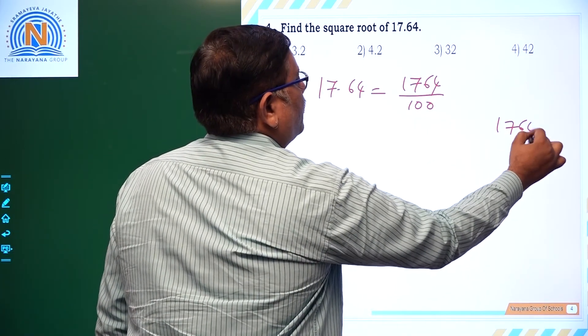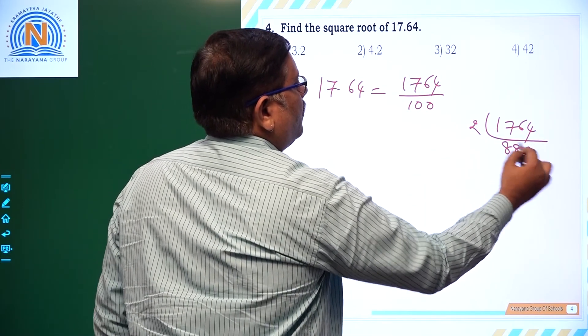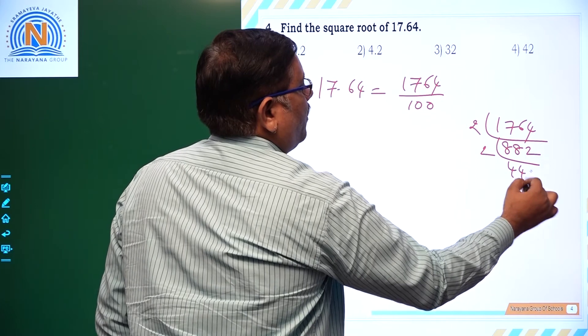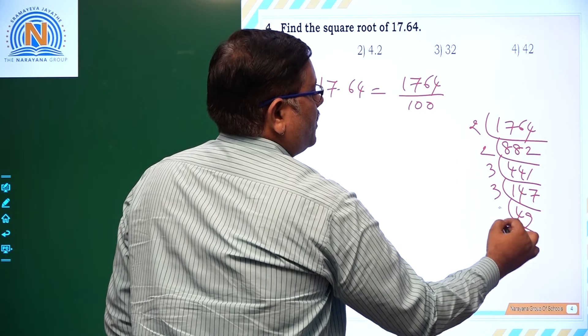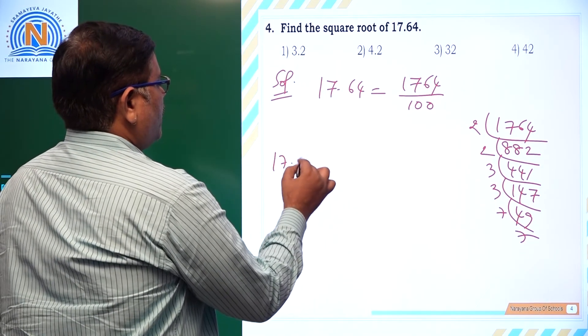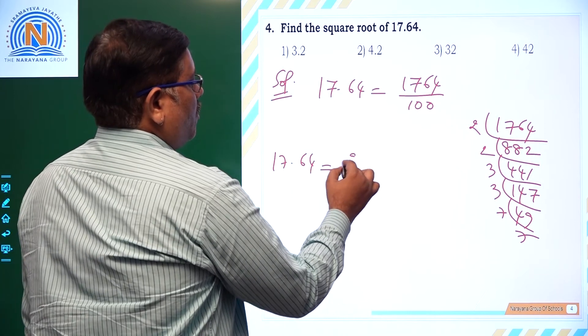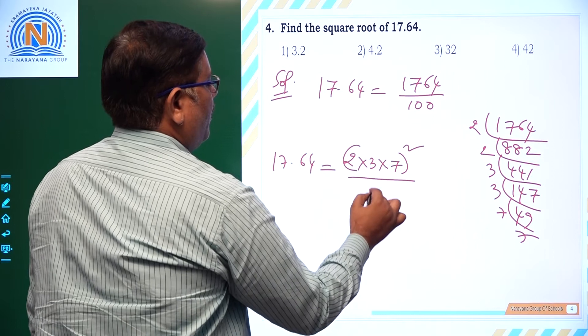Now 1764 prime factors. If you take 2 times 882, again 2 times 441, again 3 times 147, again 3 times 49, 7 times 7.